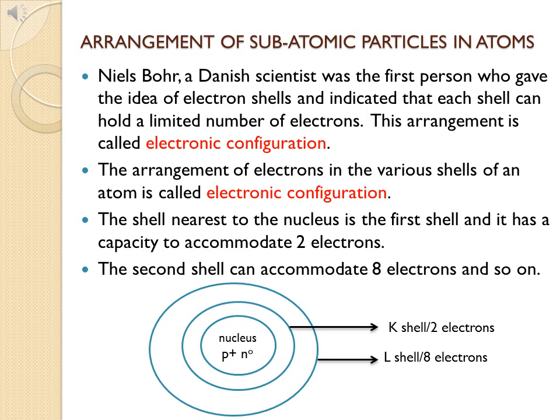Only then can electrons be filled in the second shell. The second shell is represented by the letter L or 2, and it has a capacity to hold eight electrons. Once the second shell is filled with eight electrons, electrons are then filled in the third shell, which is called M or the third shell.